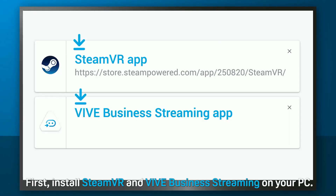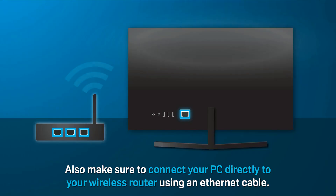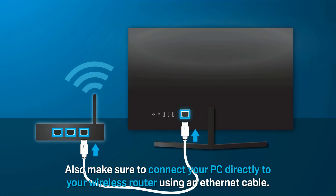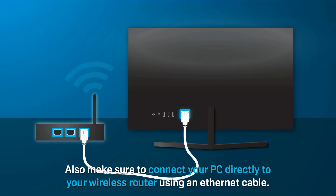First, install SteamVR and VIVE Business Streaming on your PC. You can download VIVE Business Streaming using the URL shown on screen. Also make sure to connect your PC directly to your wireless router using an Ethernet cable.